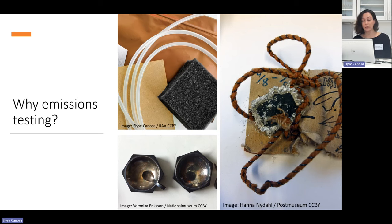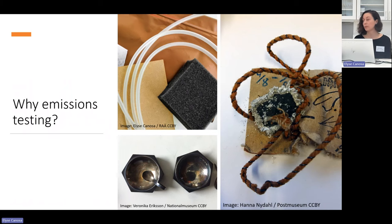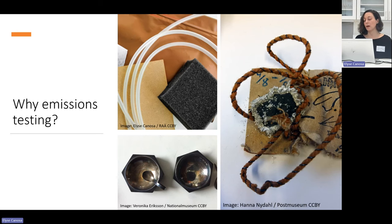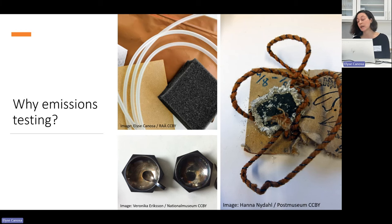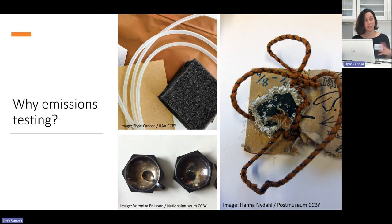Understanding the emission properties of materials is important when we are introducing new materials into spaces where we are displaying, storing, or packaging cultural heritage for transport. These materials can include things like adhesives, foams, mounting boards, plastics, and much more. As a preventive measure, we ideally want to test these materials to make sure they are not harmful before they're used in the presence of cultural heritage. We can also be concerned with emissions from aged display, storage, or transport materials, which can deteriorate over time producing new kinds of emissions. Additionally, emissions from cultural heritage objects themselves can actually harm other objects in collections if stored close to each other.